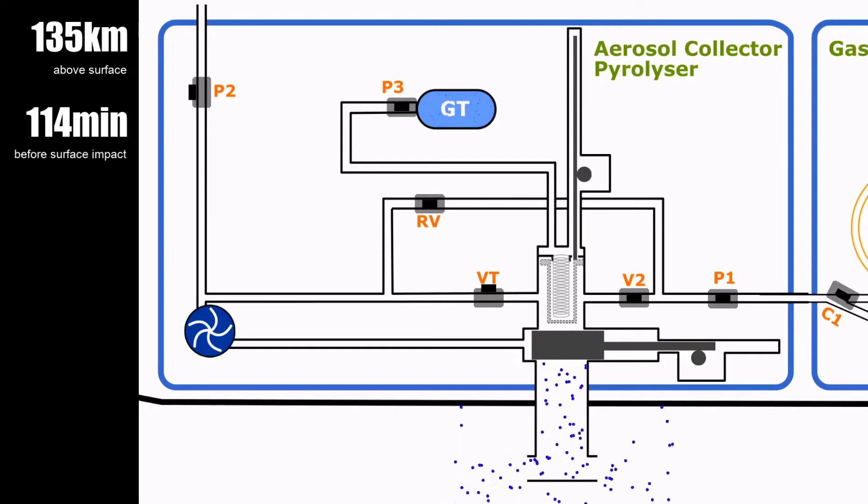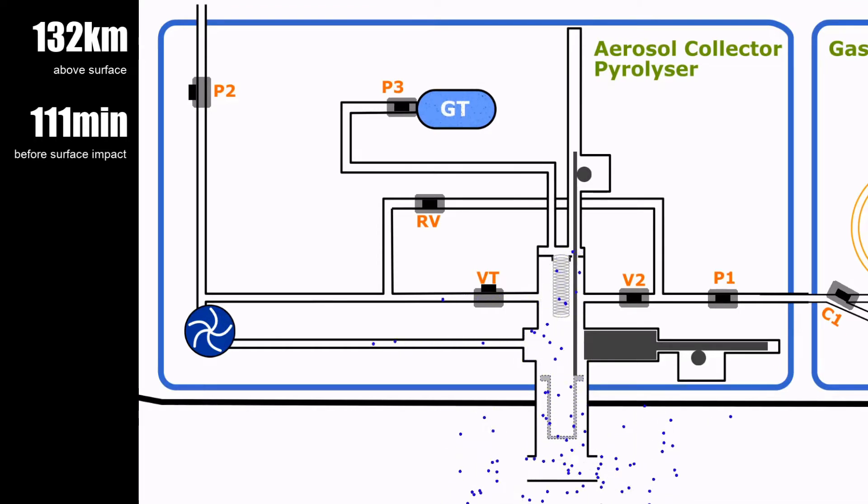As the venting continues, the gate valve is opened and the filter motor is activated to push the collection filter through the open gate valve and into the sampling tube. The filter is used to catch the aerosol particles as they pass through the sampling tube.